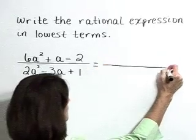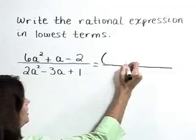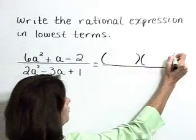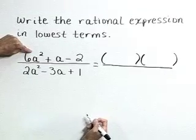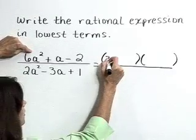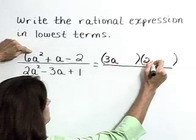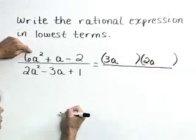So let's start by factoring the numerator using trial and error. If it factors, it will factor into two binomials. Let's use 3a and 2a as our leading terms, that gives a product of 6a squared.